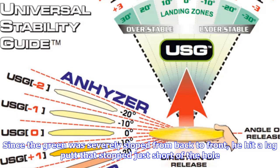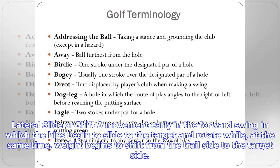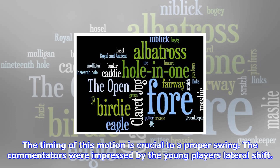There is also the reverse overlapping grip, in which the index finger of the left or top hand overlaps the smallest finger of the right or bottom hand. This is primarily used in putting, although some players use this grip when chipping the ball.